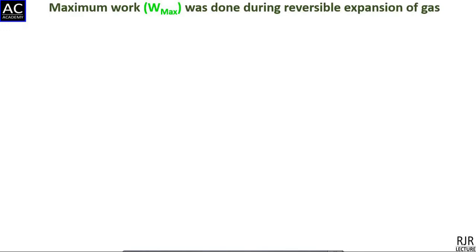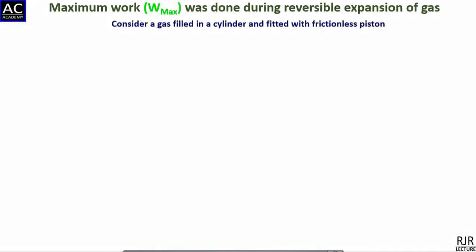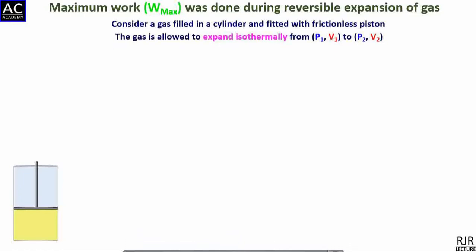Maximum work was done during reversible expansion of a gas. Consider a gas filled in a cylinder fitted with a frictionless piston. The gas is at a state having pressure P1 and volume V1. The gas is allowed to expand isothermally and irreversibly from the initial state P1,V1 to the final state P2,V2.